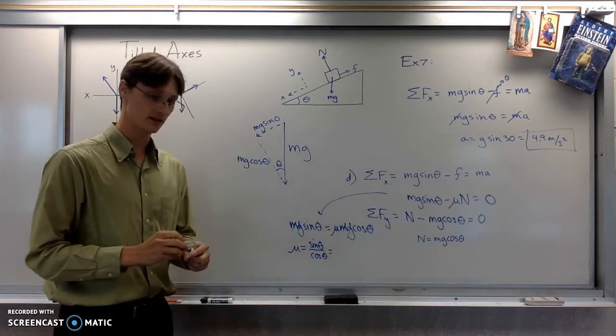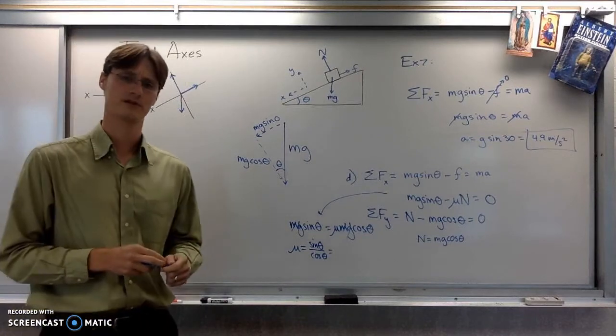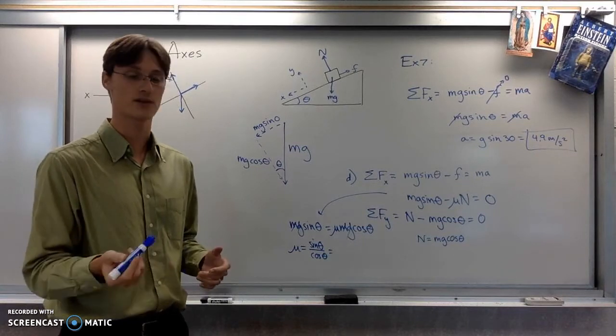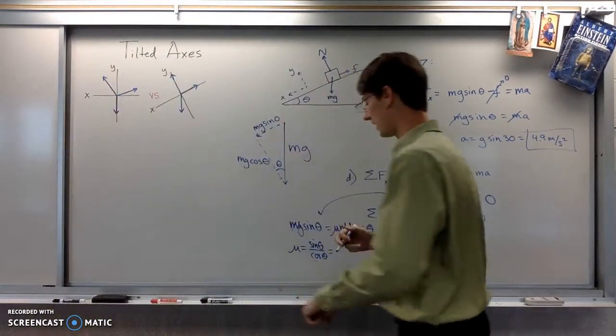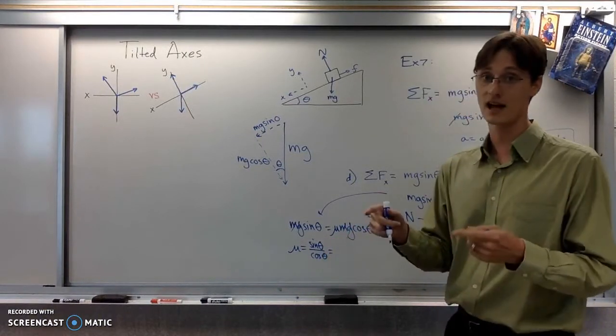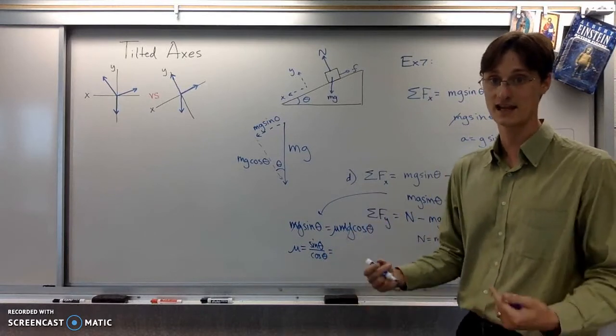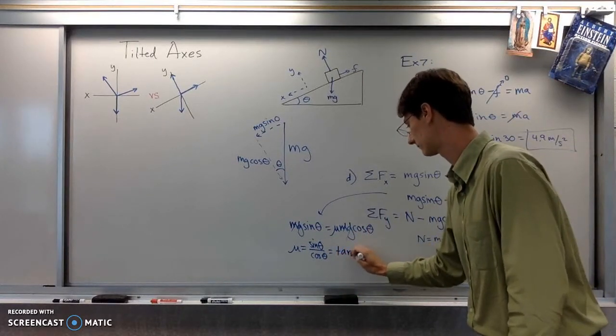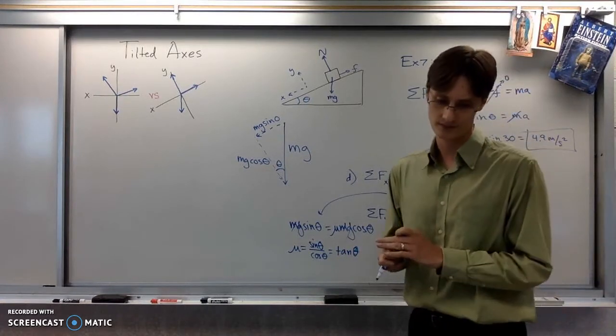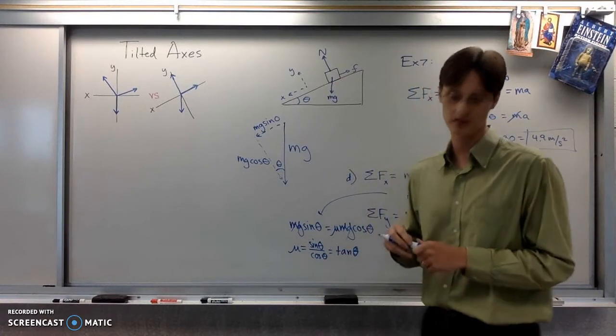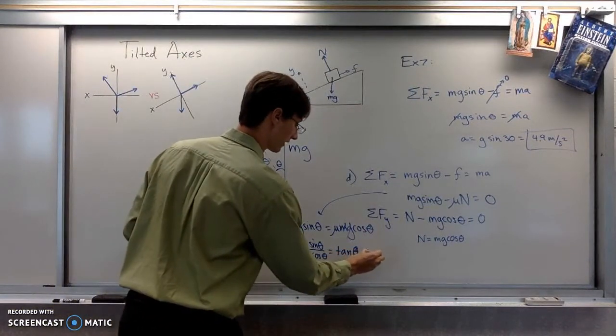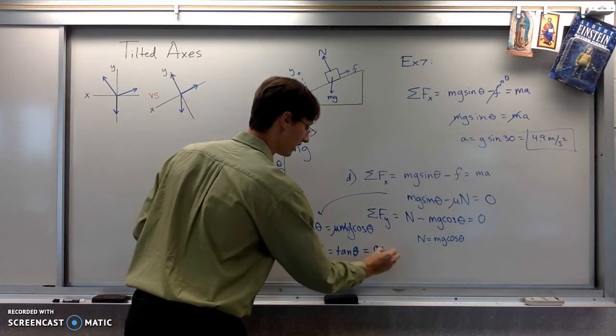If you're maybe trying to figure out what the coefficient of friction is, you could plug in sine 30 cosine 30, right? That wouldn't be that hard. But you could also do it in one fell swoop in your calculator if you remember the trig identity that sine over cosine is tangent. That equals tan theta. All right. So given that it's a 30 degree angle, if we plug in tangent of 30, we're going to get that the coefficient of friction is 0.577.